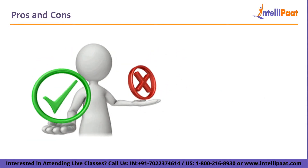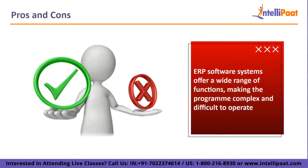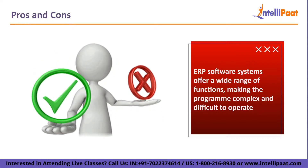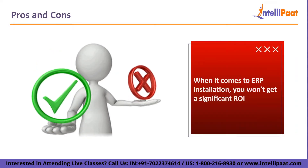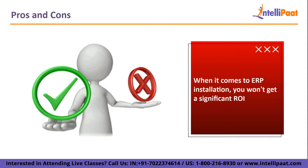The cons of ERP: If you invest in a typical ERP system such as SAP Business One, the cost of a single license may easily reach five figures. The biggest drawback of ERP software is unquestionably its cost, particularly for small to medium-sized firms, where the upfront cost alone can be unaffordable. ERP software systems offer a wide range of functions, making the program complex and difficult to operate. Businesses frequently get caught up with the possibilities of an ERP solution but neglect to properly plan for its adoption, and without understanding the system's ins and outs, you won't get a significant return on investment.